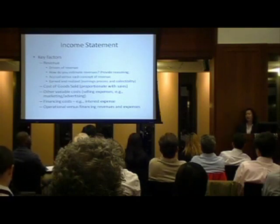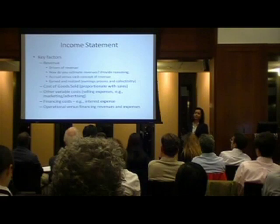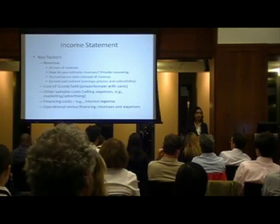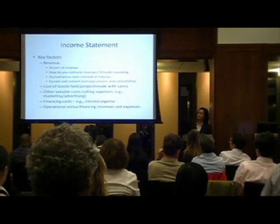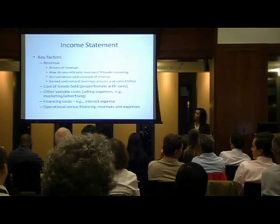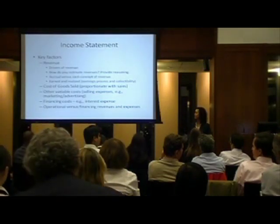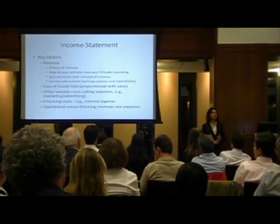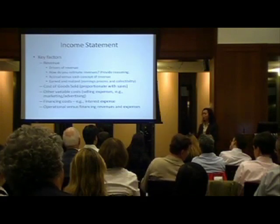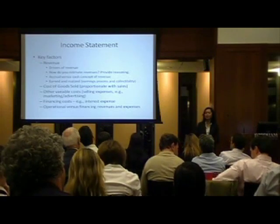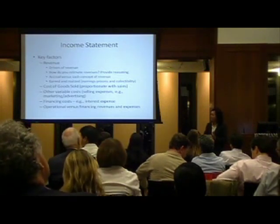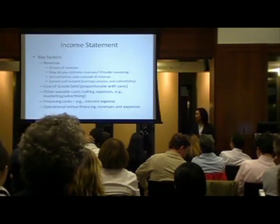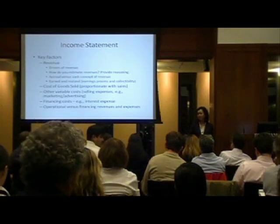Other things to think about are variable costs like selling expenses - costs that vary with your sales. The more you sell, the more costs you'll incur for selling expenses, marketing, or advertising. Next are financing costs and interest expense - any costs you incur because you're borrowing, whether from a bank or from family and friends who may charge you interest. You need to classify these expenses and revenues into categories: operating, financing, and investing.